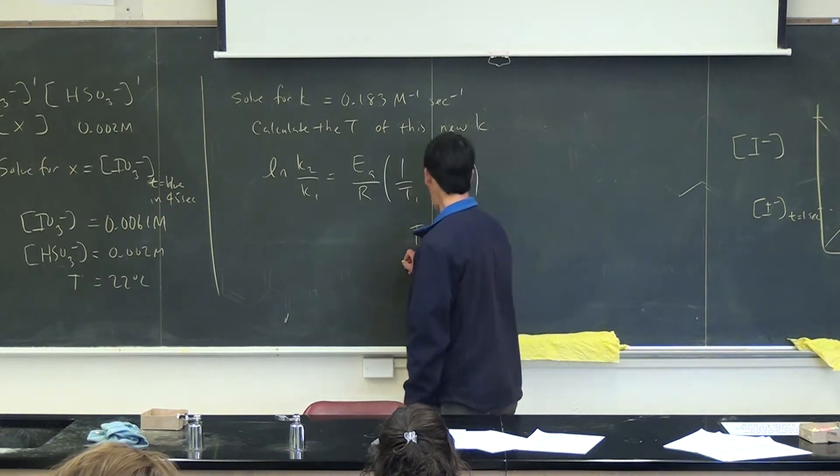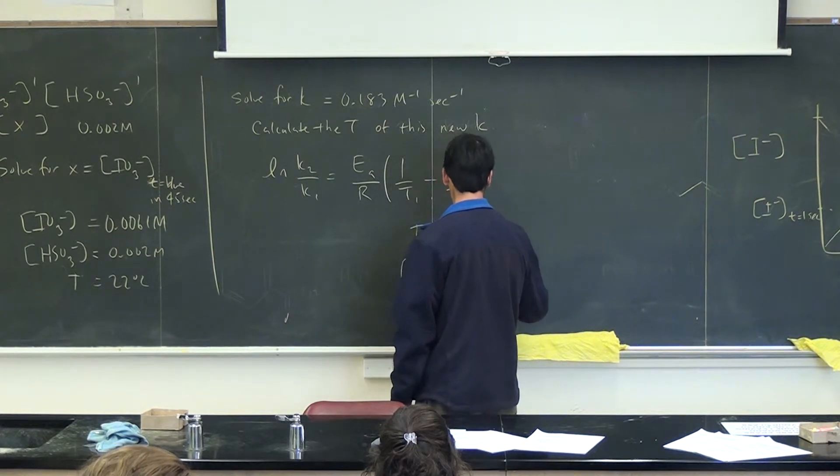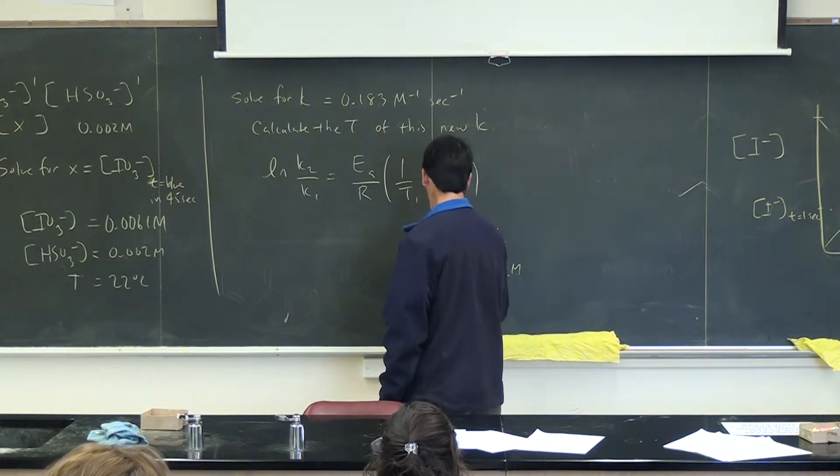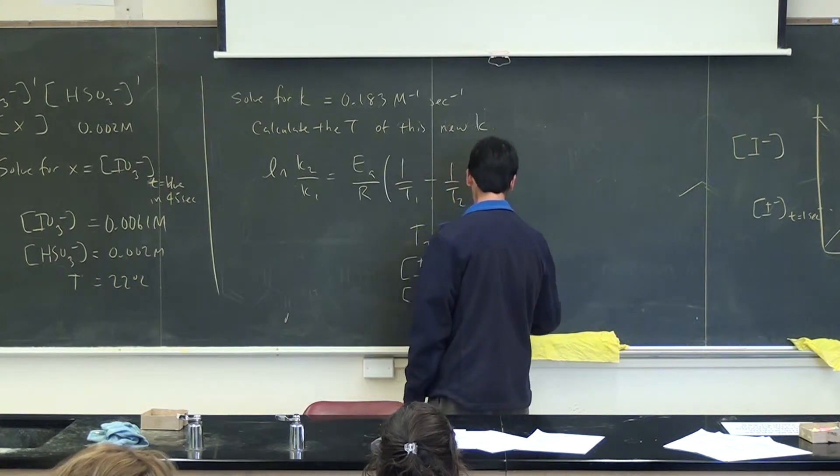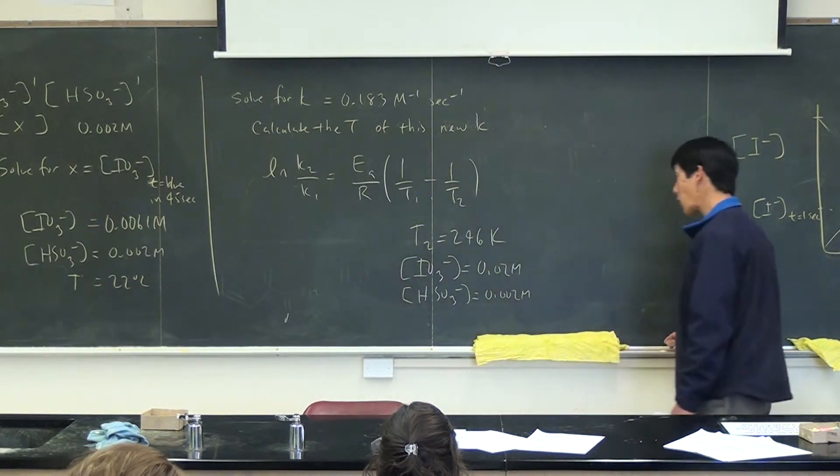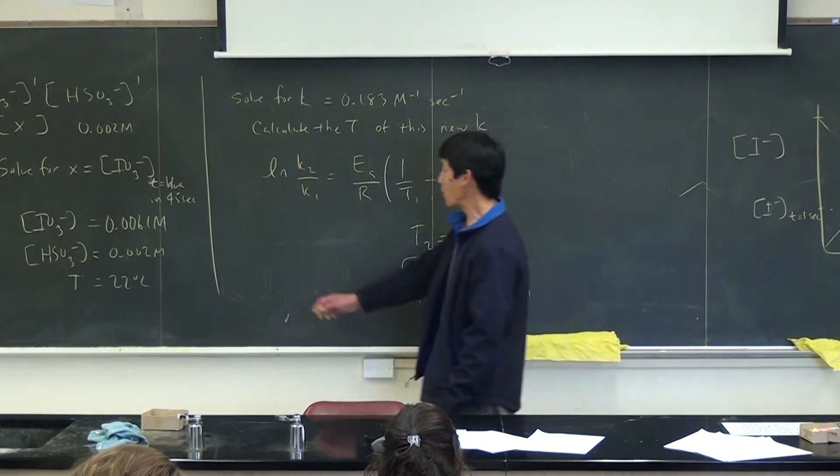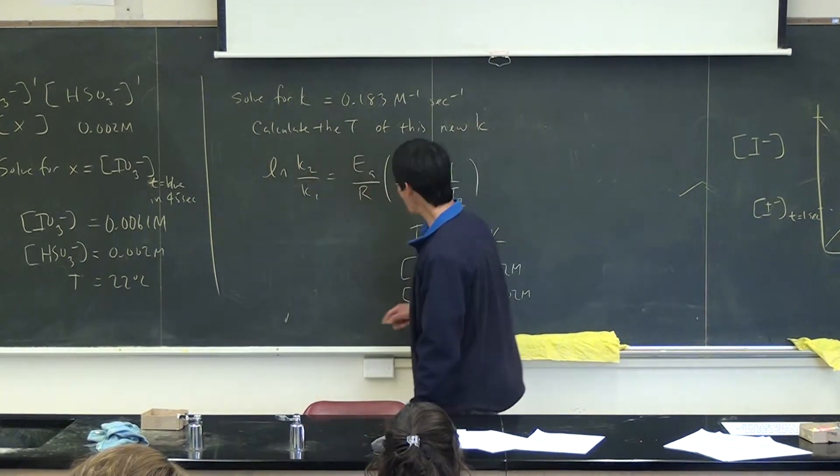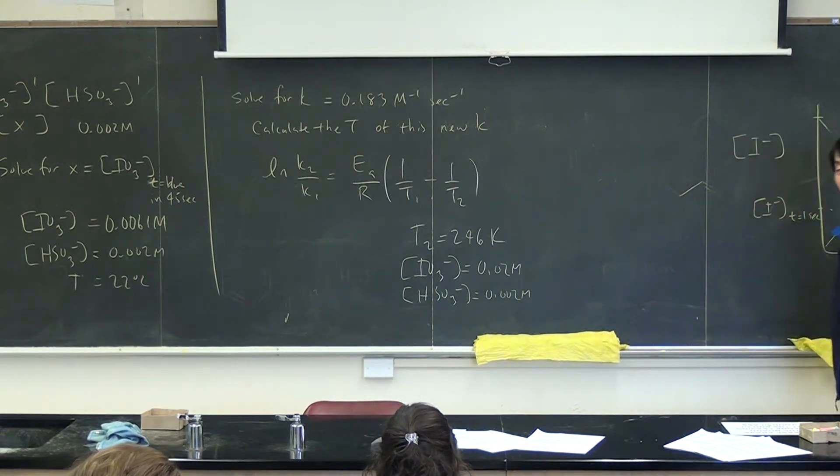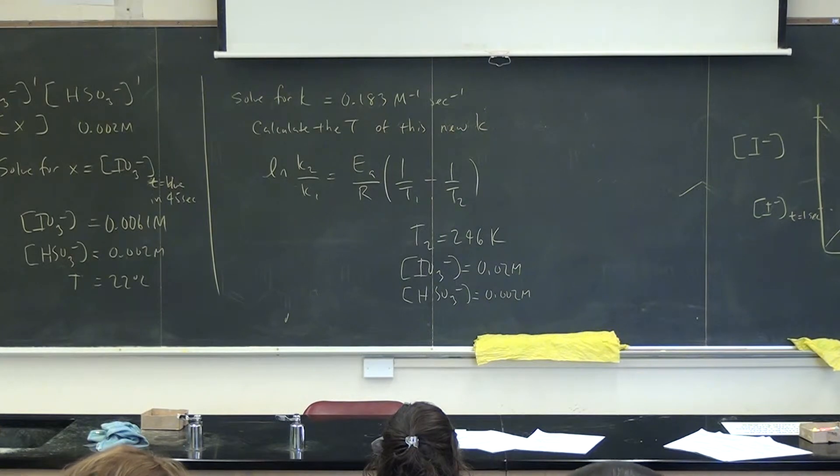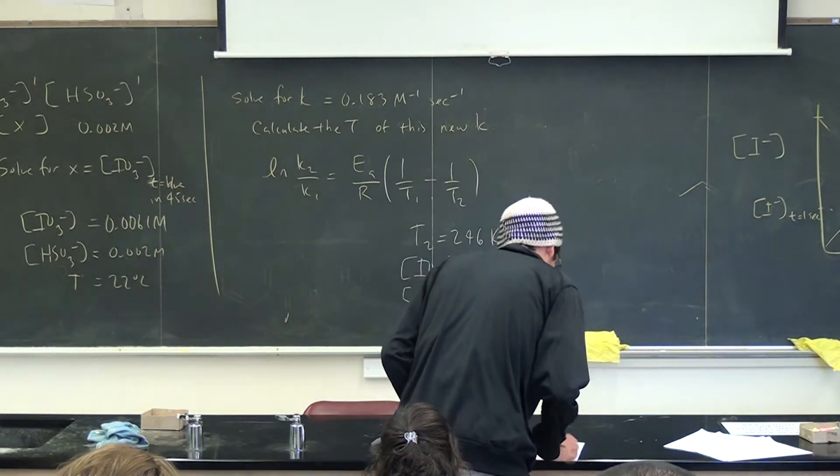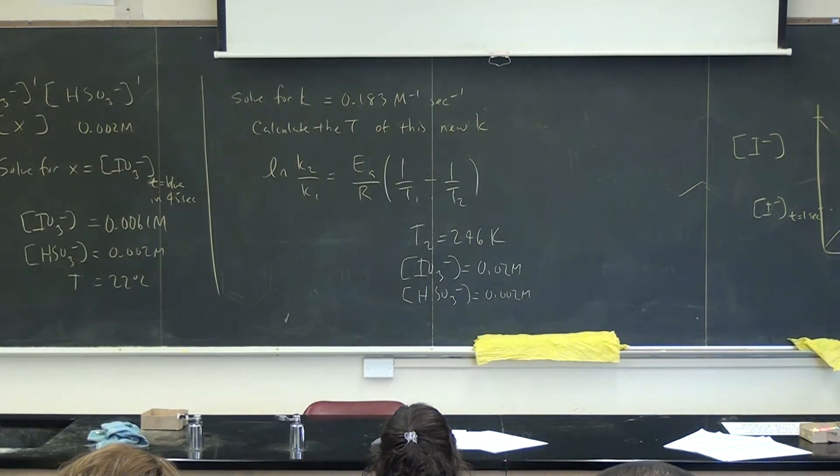So, the other way to make the solution turn blue is, use this temperature, and then your IO3 minus concentration is 0.02 molar, and your HSO3 minus concentration is 0.002 molar. Okay, so those are the two, I'll say the two more straightforward ways to do it. This way involves the fewest calculations. This involves one more calculation. There's other ways to do it. But you would change the concentration of HSO3 minus and IO3 minus and change K, but then you've got to do more calculations.